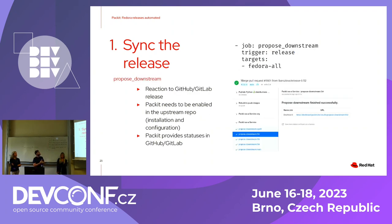What does proposed downstream do? You can see a pretty simple definition — the job gets triggered on a release, and we propagate the changes to Fedora. Proposed downstream lives in the upstream repository, so it is very good for maintainers who also have control over the upstream repository. You create a config, enable the GitHub app, and we listen for releases and do our job.